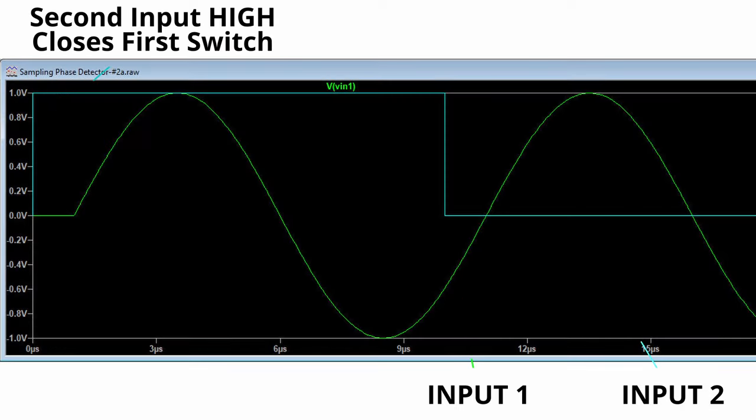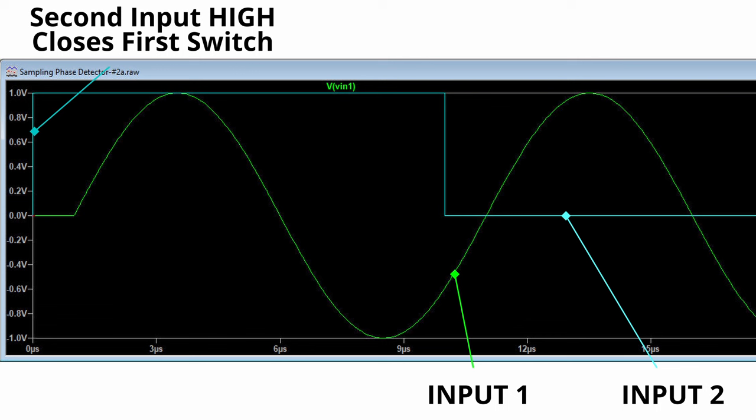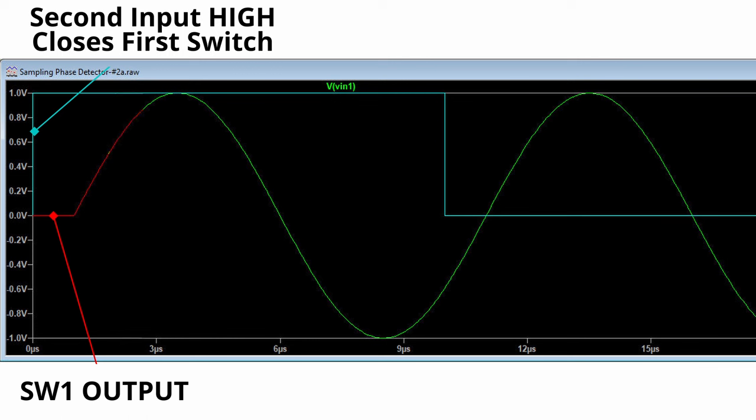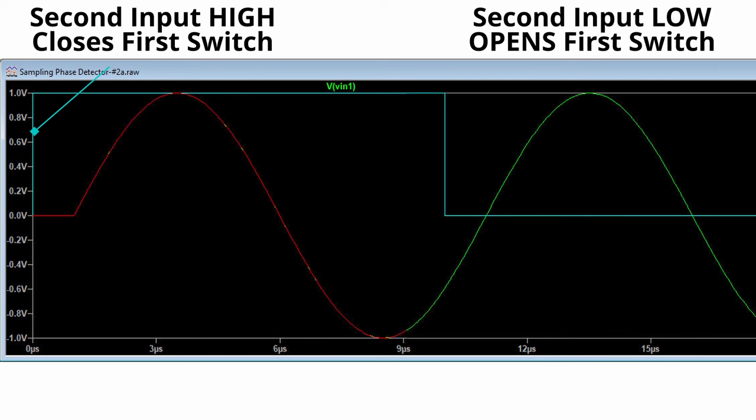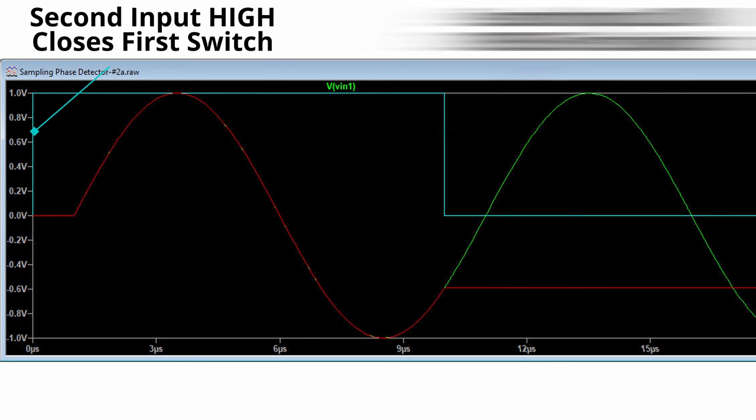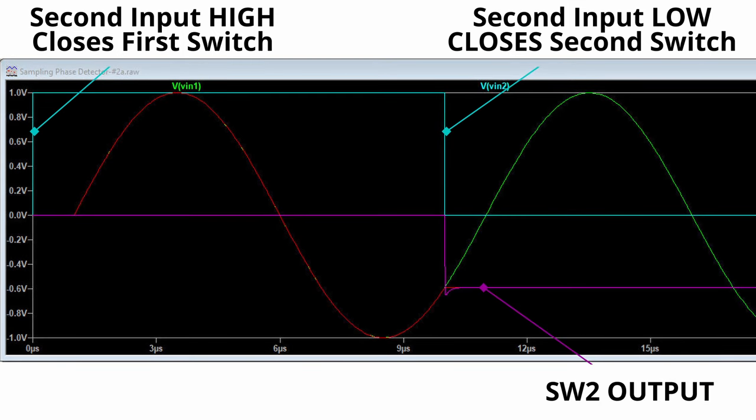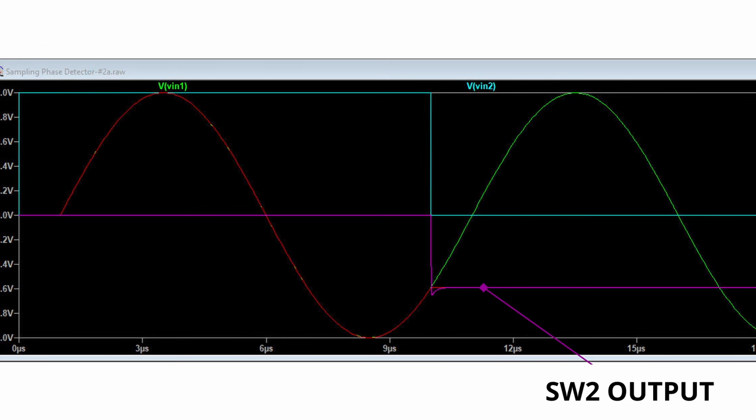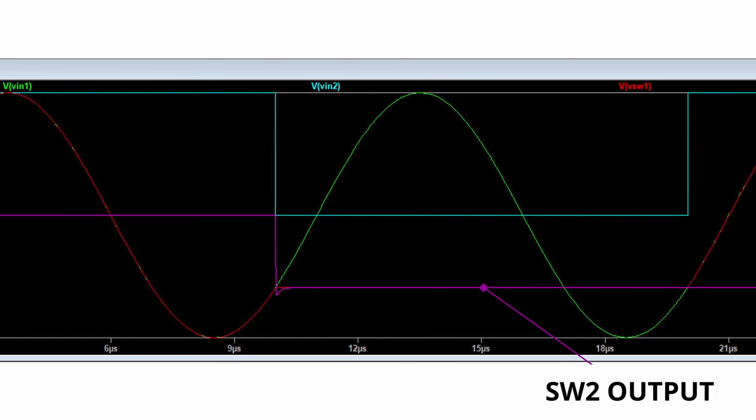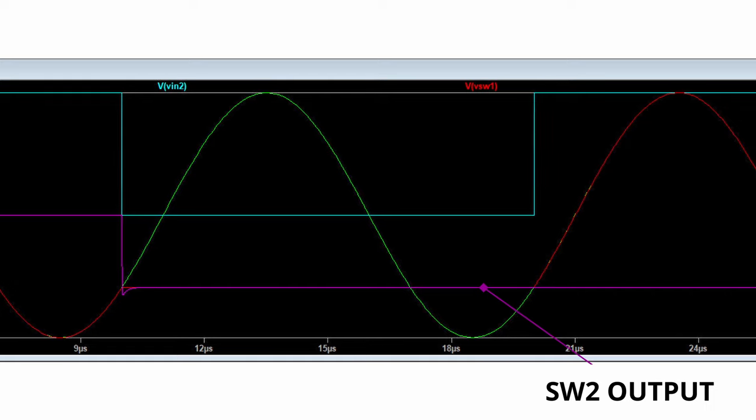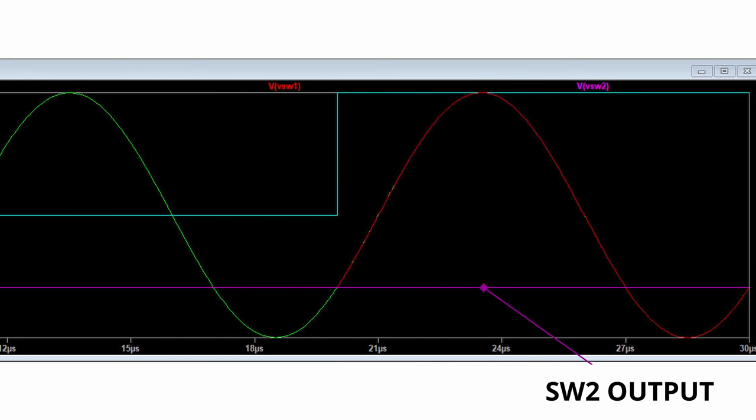Now, let's think about how this works. When the second input closes the first switch, the voltage on the capacitor that's on the output of that switch follows the voltage of the input. When the switch opens, the capacitor voltage remains unchanged reflecting the voltage of the input at the time that the switch opened. At the same time that the first switch opens, the second switch closes to sample the output voltage of the first switch. It holds on to this during the time that the first switch closes. When there is a constant phase difference, and the two input frequencies are exactly the same, the voltage will always be the same, as you can see here.